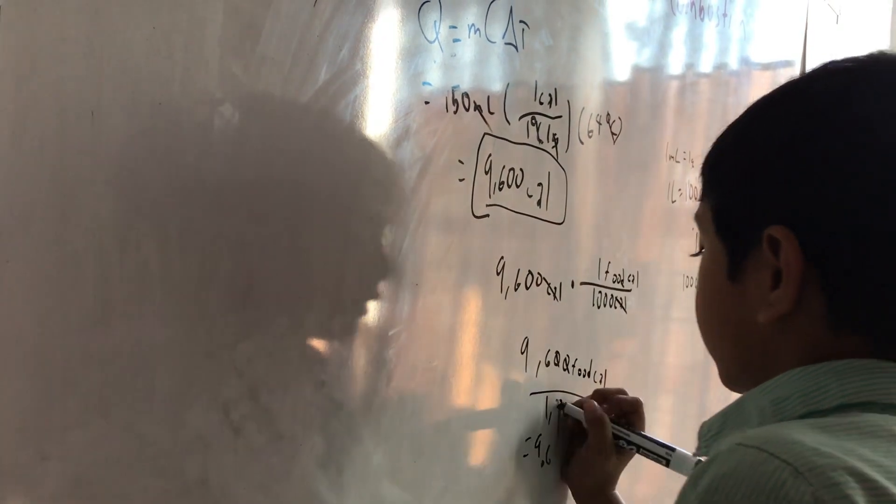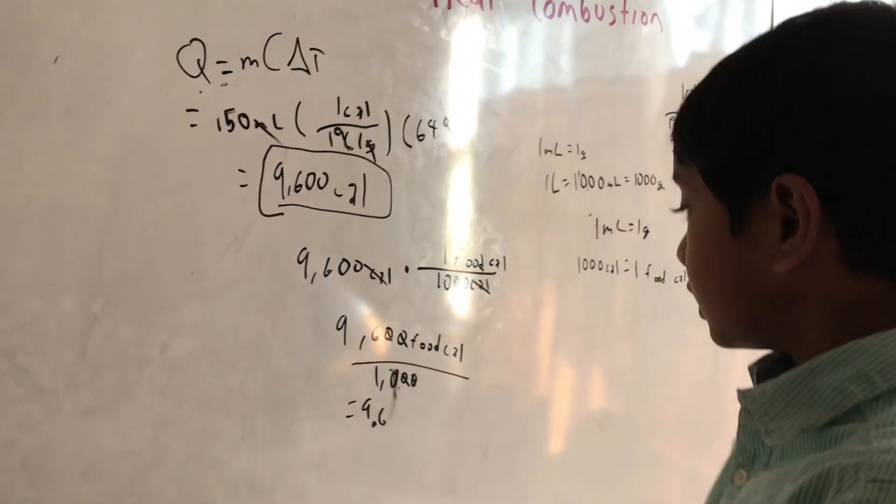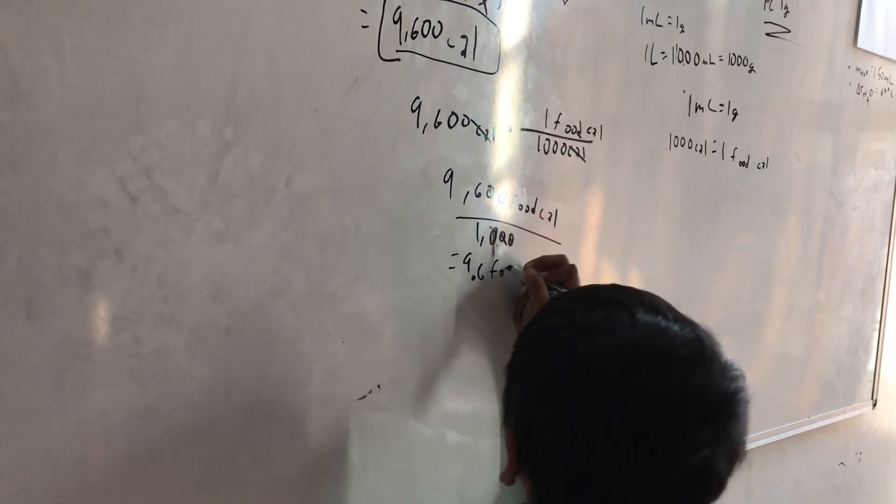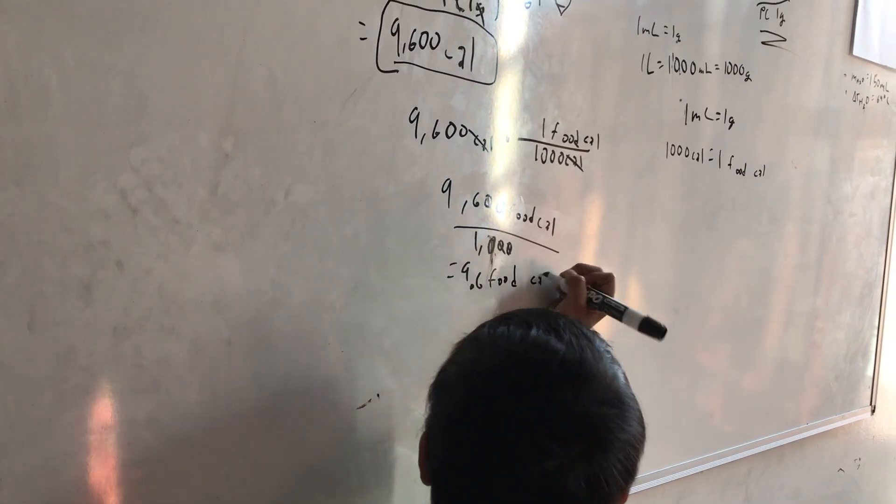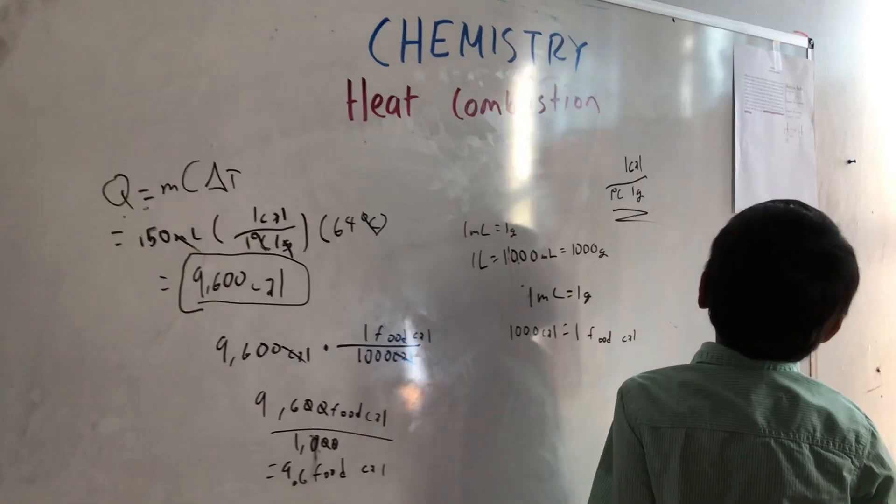Wait, no, this is wrong. So you will get 96 over 10, which is 9.6. So 9.6 food calories. Okay. Now, let's see.